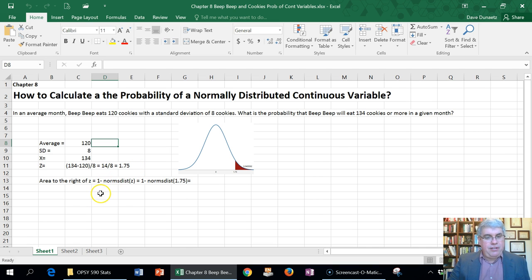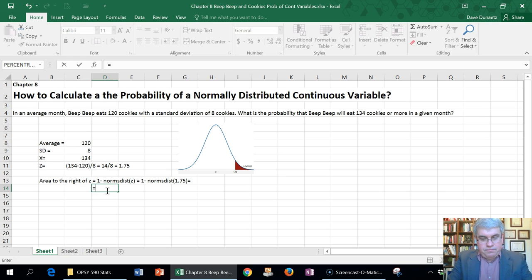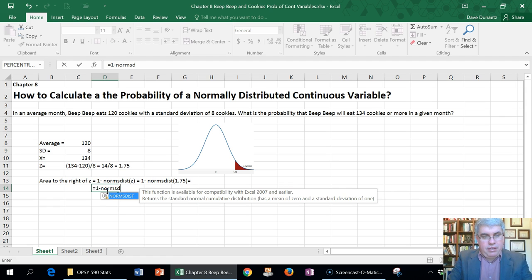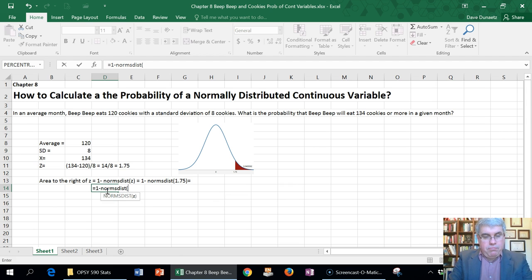Now the area to the right of 1.75 here is going to be one minus the area to the left, and the area to the left is going to be the NORM.S.DIST. Remember when we calculated areas under the curve for Z scores.